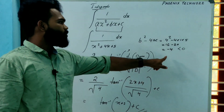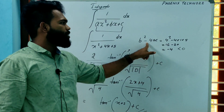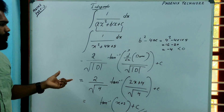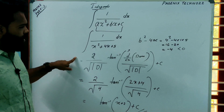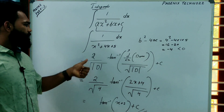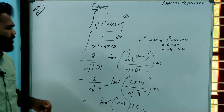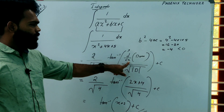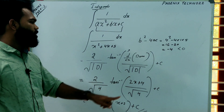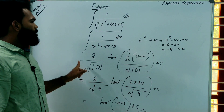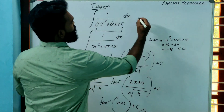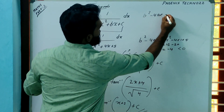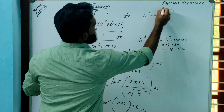The main idea is: find the discriminant b²−4ac. If it is negative, apply the shortcut: 2 divided by the square root of the modulus of the discriminant, into tan inverse of the derivative of the denominator divided by the square root of the modulus of the discriminant, plus C. This shortcut can only be applied when b²−4ac is less than zero.